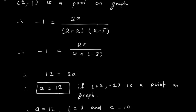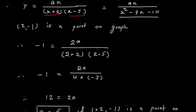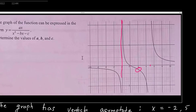After substituting, I get 12 = 2a, so a = 6. With (2, -1) as a point on the graph, a = 6. Therefore, our final answers are: a = 6, b = 3, and c = 10. This is how we evaluate the coordinates a, b, and c.